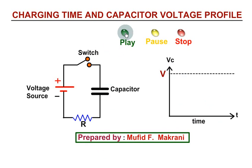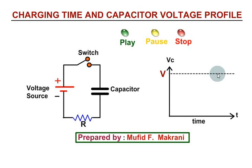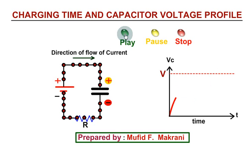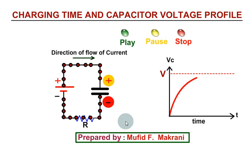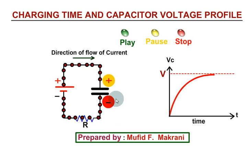I'm going to hit the play button. The switch will get closed, the capacitor will get charged in this direction, and the curve will trace over here. You have to observe the nature of the curve. Look at the rate of charging of the capacitor.